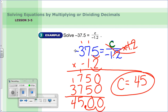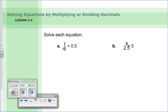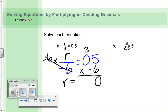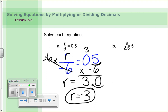Next example: r divided by negative six equals five tenths. Variable is r; dividing by negative six, so multiply both sides by negative six. Six times five is thirty, zero times six is zero plus three — count one decimal hop — r equals three point zero, which is just three. Multiplying a positive by a negative — different signs — so the answer is negative three.